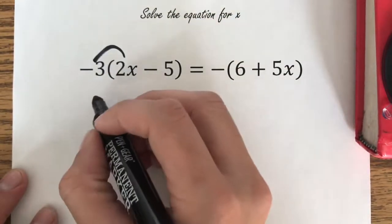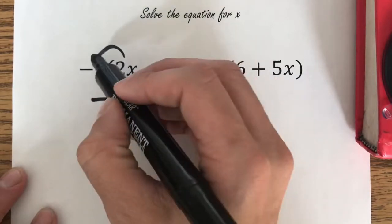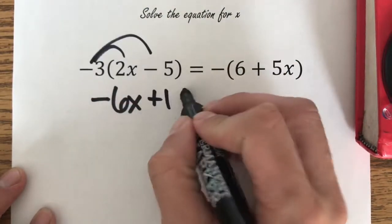Negative 3 times positive 2x is negative 6x. Negative 3 times negative 5 is positive 15.